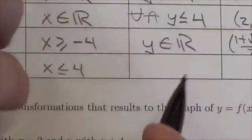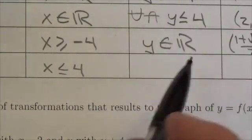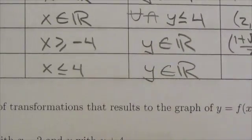When you reflect the range here, because it was all reals, that reflection won't do anything, so it's going to stay all reals.